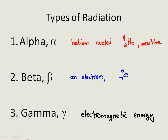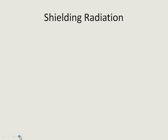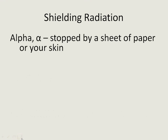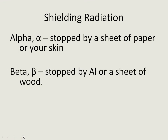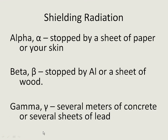These three types of radiation can be blocked. If you want to shield yourself, alpha is so large that it's stopped by a sheet of paper or your skin, so it's not harmful to you. Beta radiation can be stopped by aluminum foil, a sheet of aluminum, or a sheet of wood. Gamma radiation is very high energy and needs several meters of concrete or several sheets of lead to be blocked.